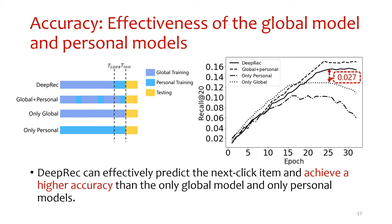DeepBReath trains a global module with all users' privacy-sensitive data before the GDPR deadline and fine-tunes a personal module for each user before the training deadline, satisfying GDPR requirements. The global-and-personal module baseline trains both modules using all users' privacy-sensitive data before the training deadline, which does not satisfy GDPR. The global-only module trains a global module for all users — the training schedule used by almost all state-of-the-art sequential recommenders.